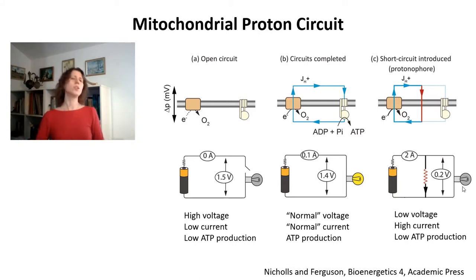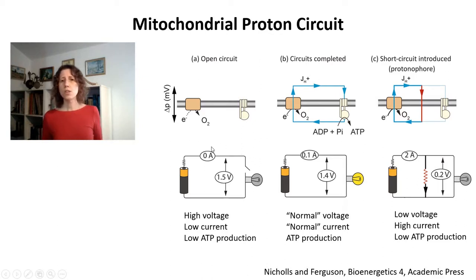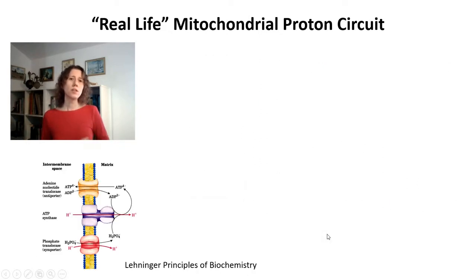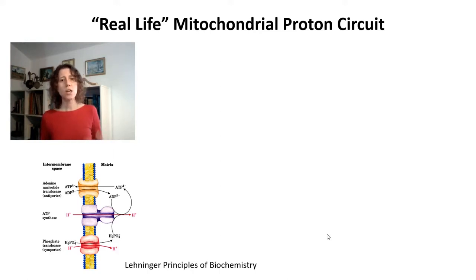And that, in a nutshell, is the mitochondrial proton circuit. However, this is a very simplified proton circuit because it assumes that protons are pumped out by the electron transport chain and only come back in either through ATP synthase or through a short circuit. In real life, things are a little bit different. Mitochondria use proton motive force for a number of transport functions besides synthesizing ATP.